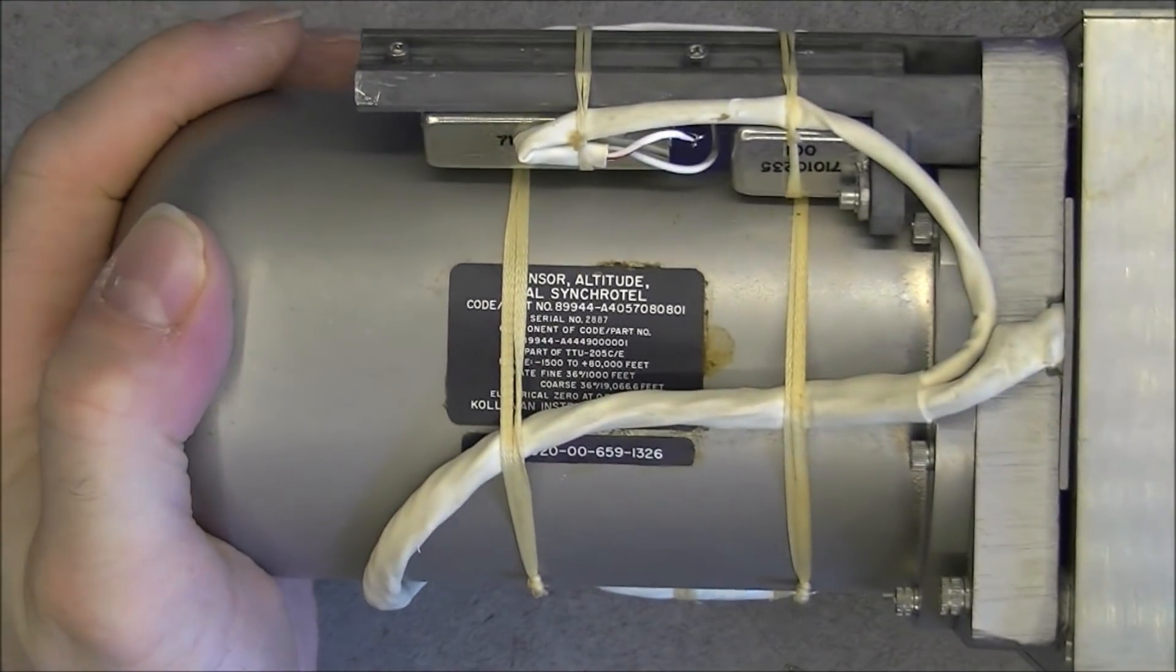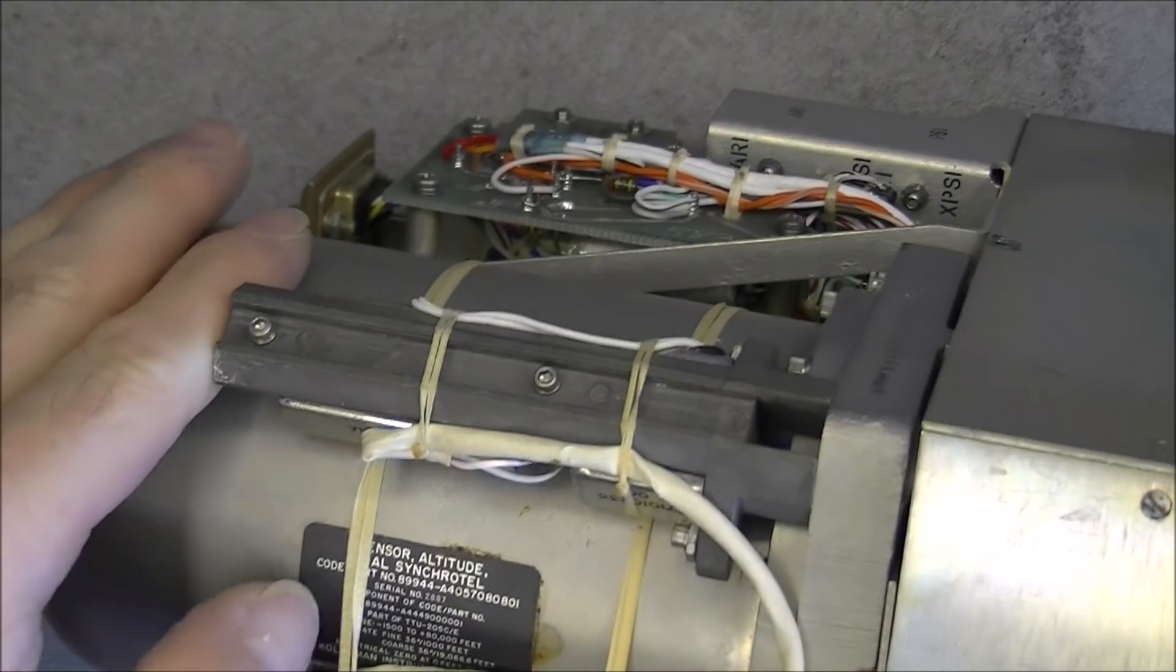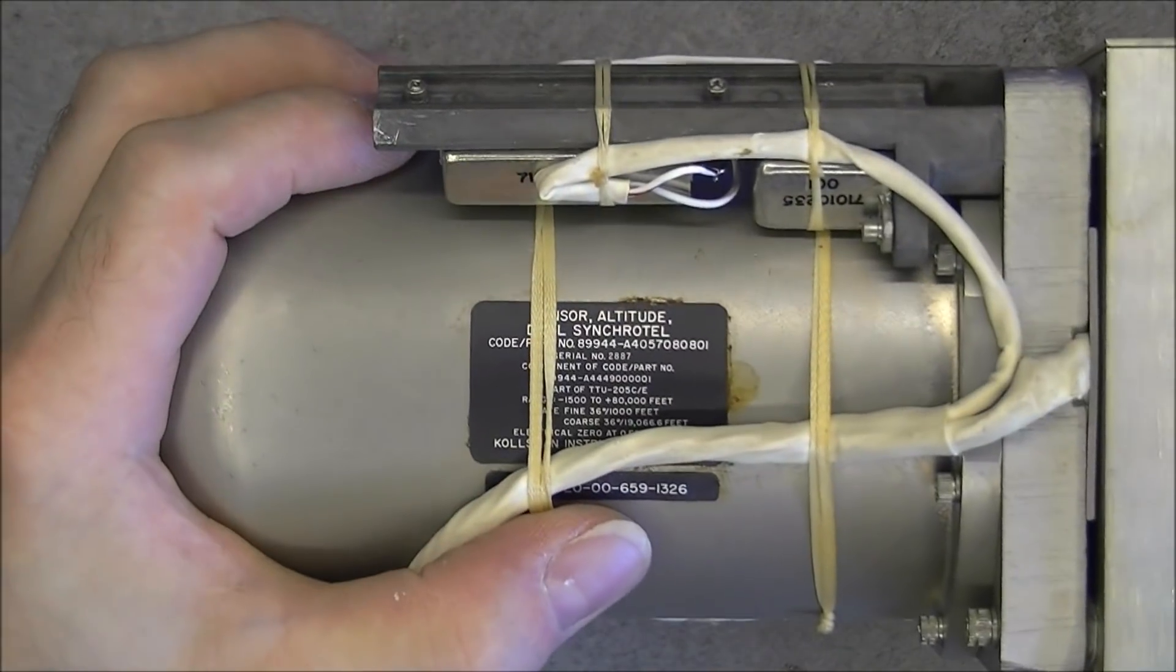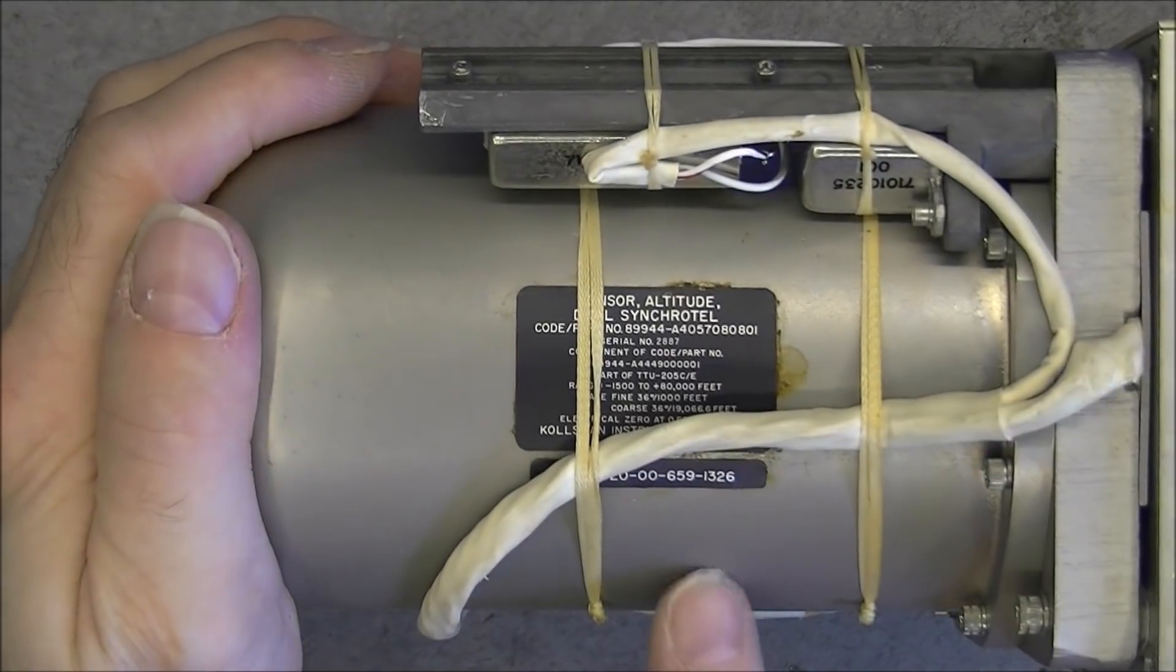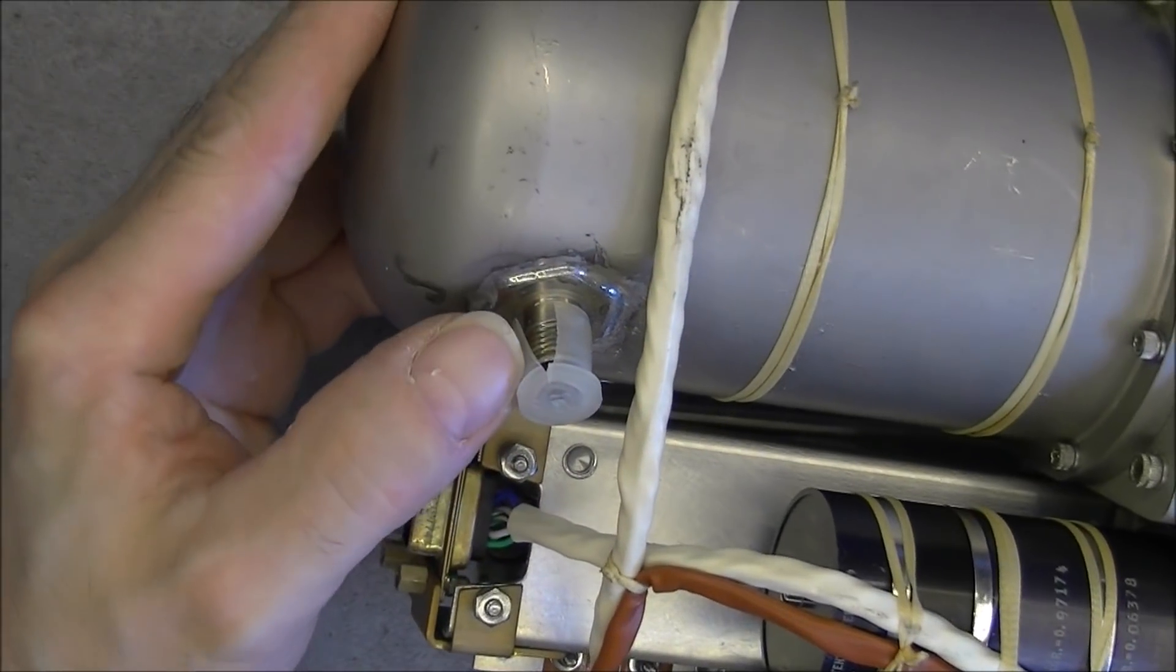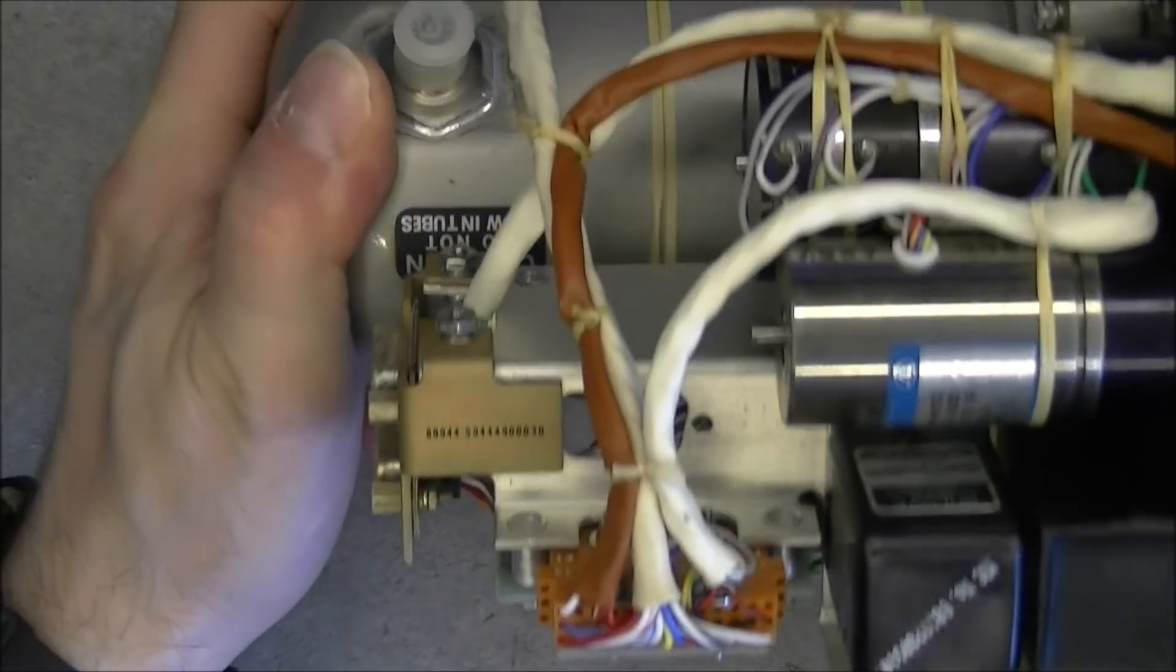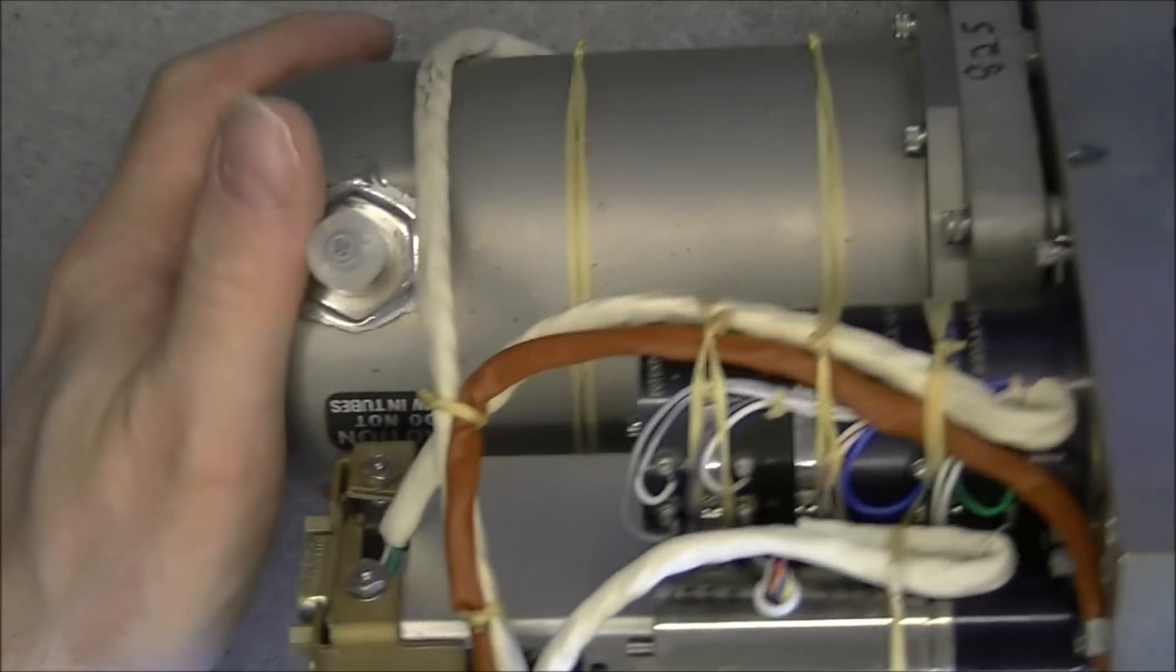Here we have sensor altitude, dual sacrotel, interesting. So this must be a very precise altitude pressure sensor with of course a pneumatic input here. Of course it is written upside down but caution do not blow in tubes.